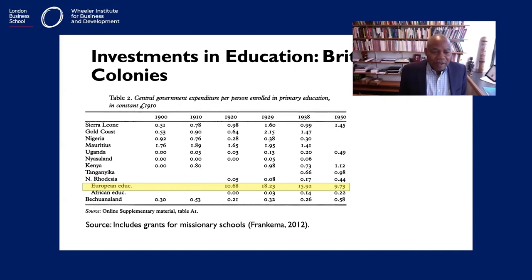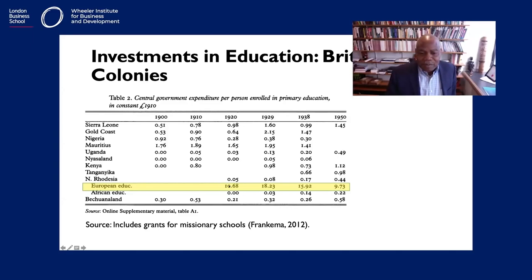Look at the difference in Northern Rhodesia, for instance, starting in 1920: the expenditure between natives and Europeans was more than 20 or 40 times what was spent on Africans — actually far more. This just shows the huge discrepancy between expenditure on Africans and on Europeans.